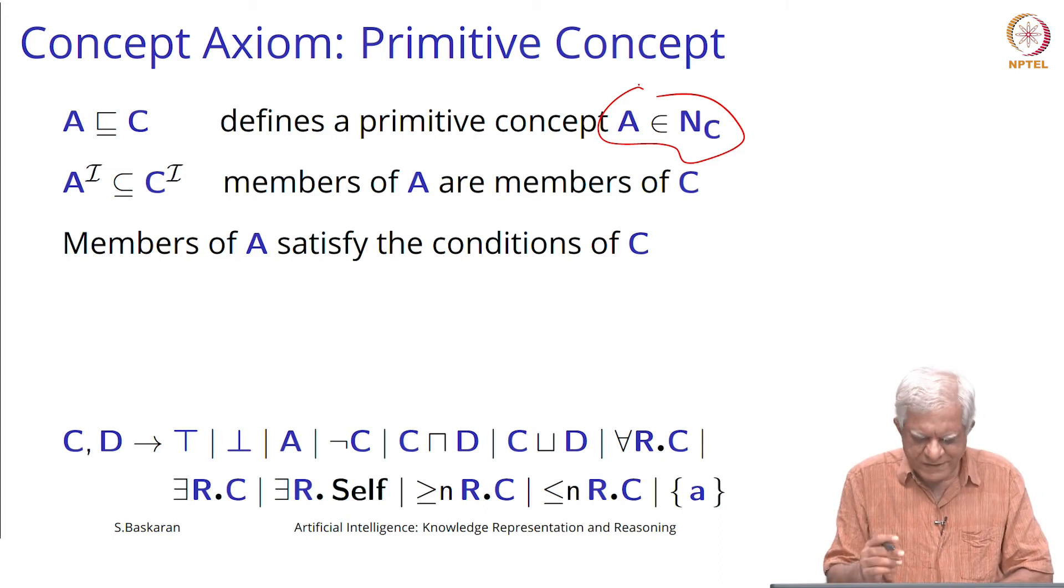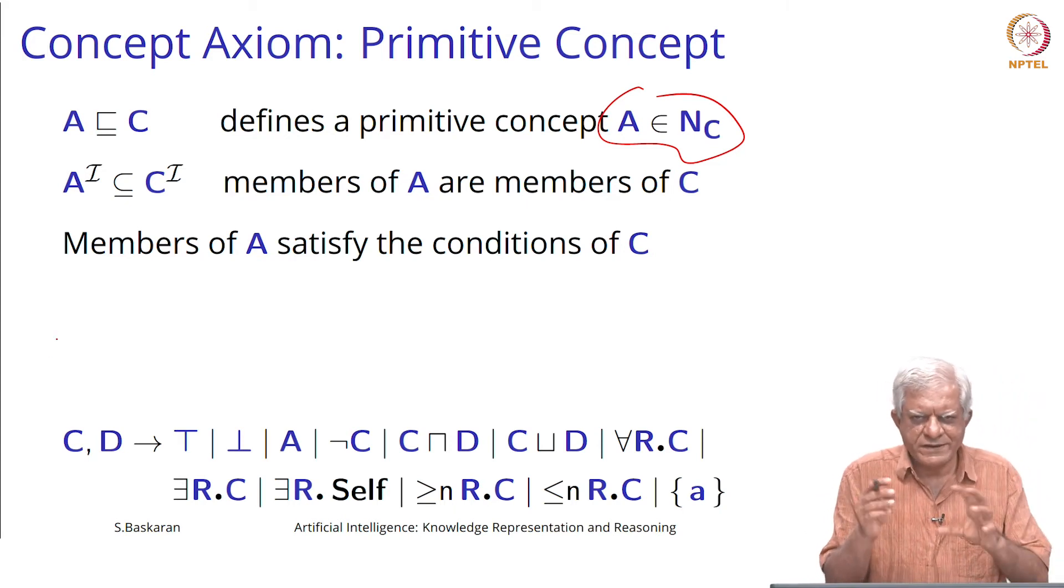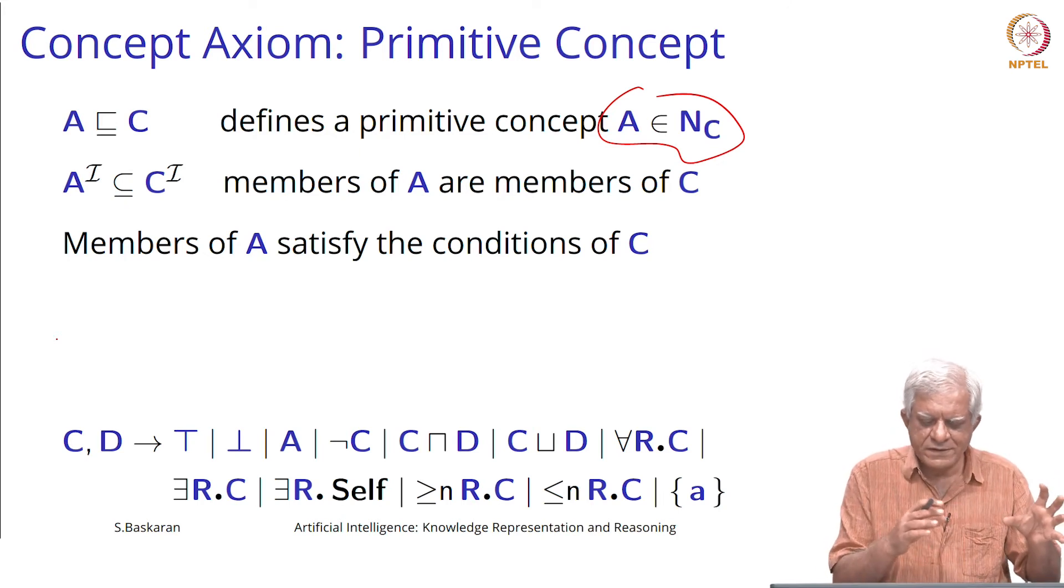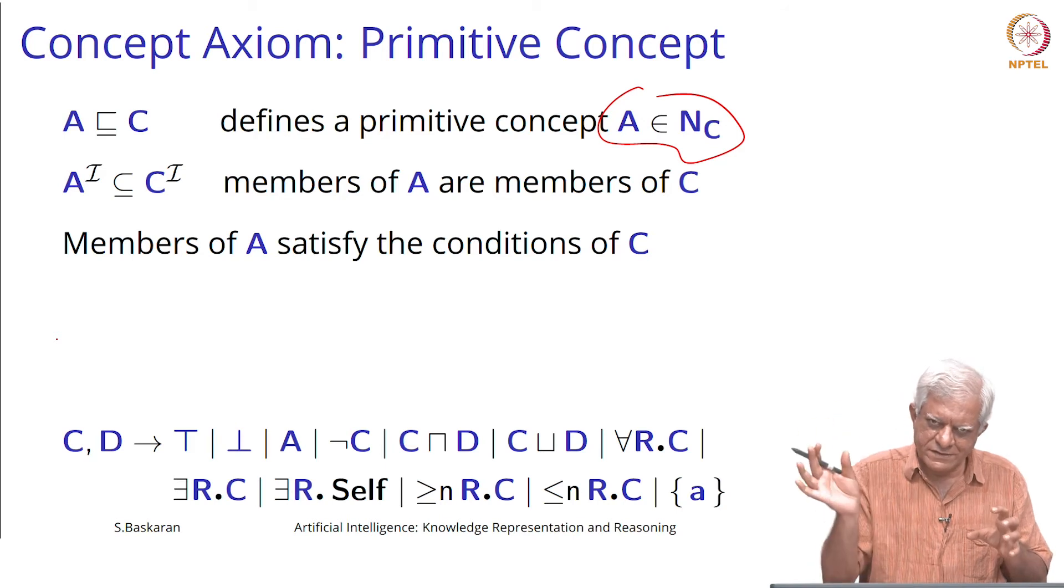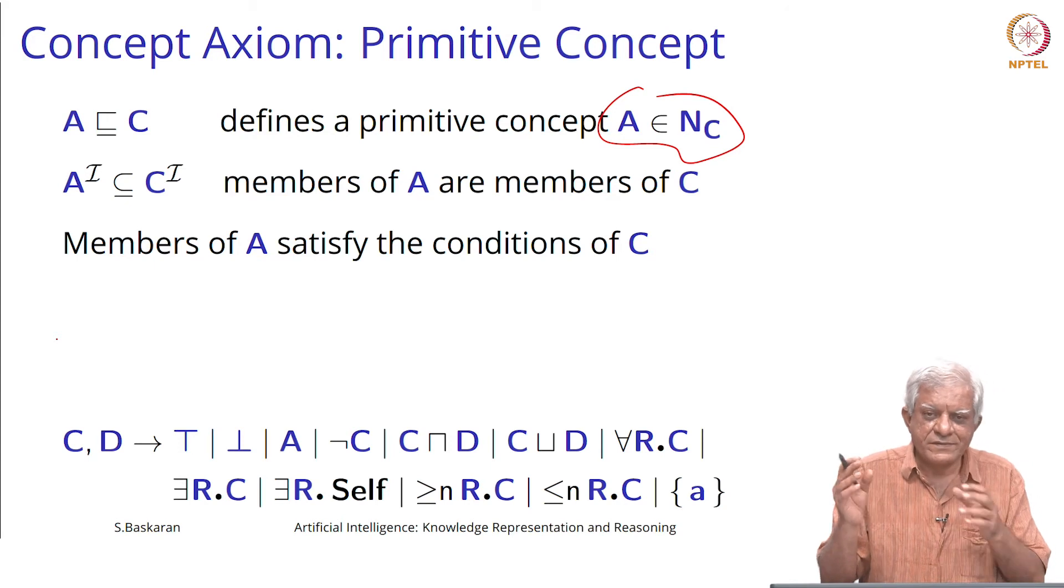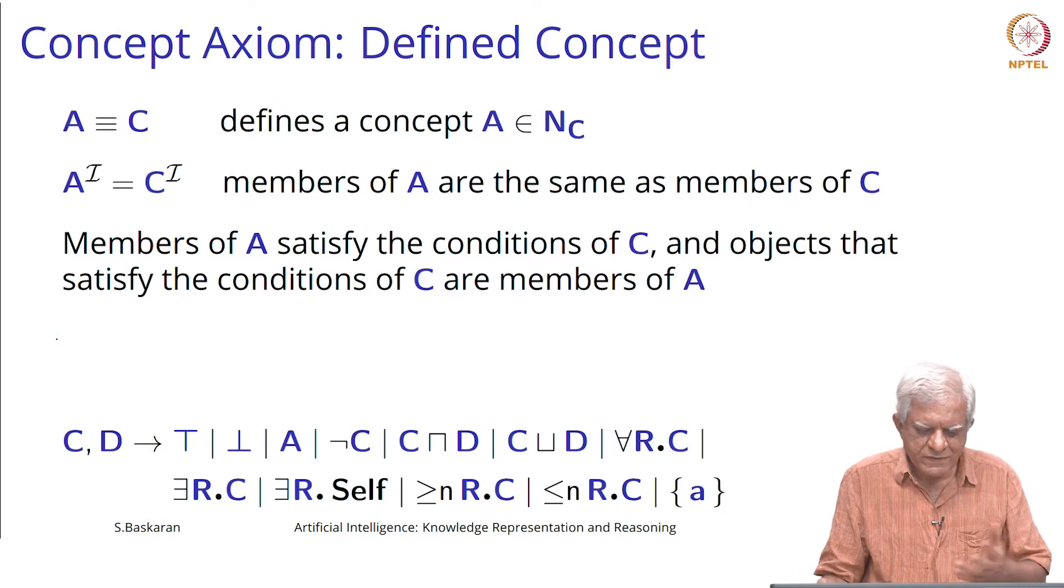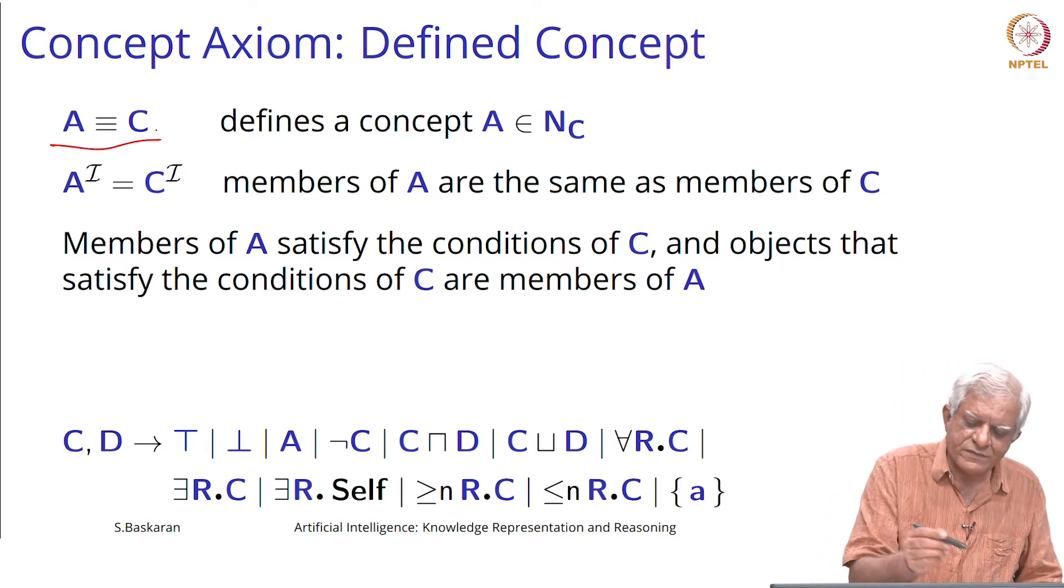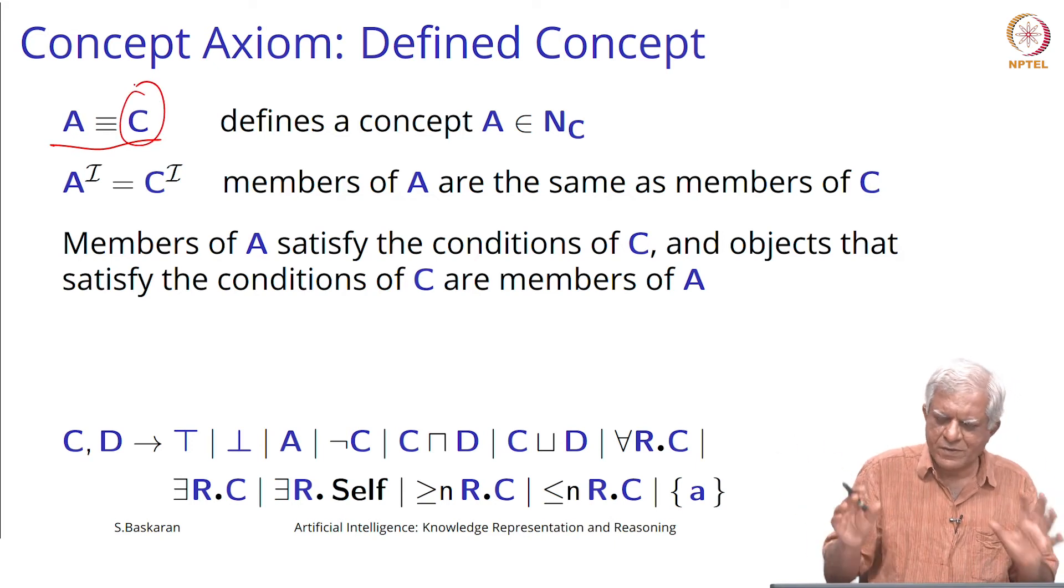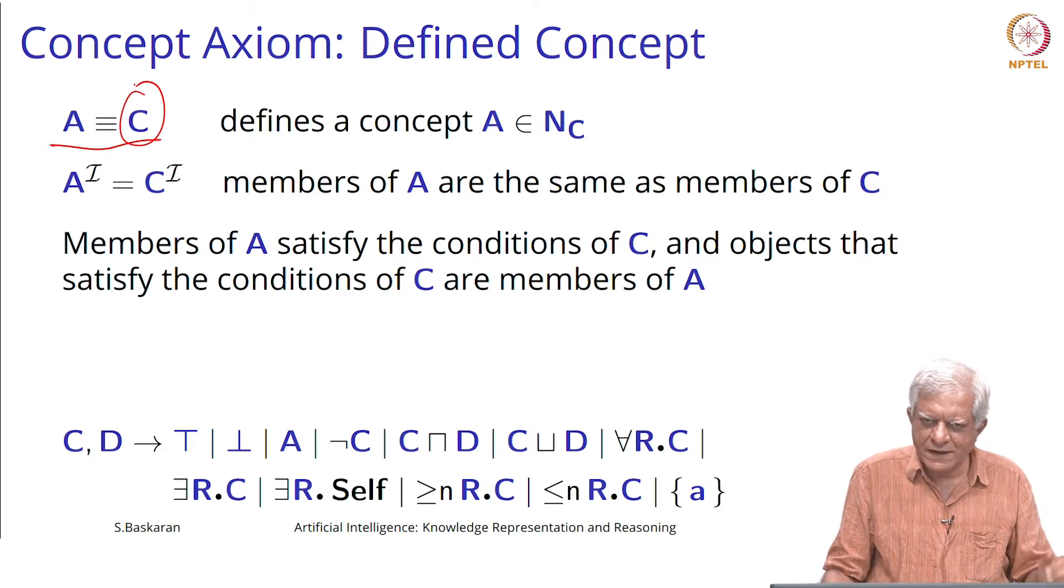The only difference between this and when we said that C is subsumed by D is that C and D could be arbitrary things, whereas here we are saying that I am defining this class and this is a subclass of that some class. But we have not said precisely what kind of subclass it is, but it is a subclass that is all we know. If we say equivalent, then we are giving a name to a concept that we have defined. We could have defined C using whatever complex expression and then we are saying we will call this a new concept.